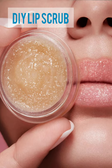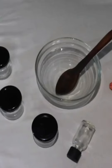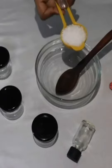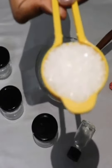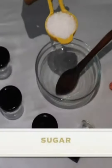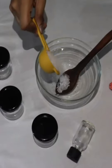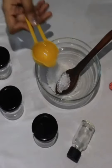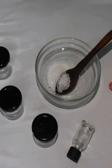Let's make a lip scrub. You will need one tablespoon of sugar. The sugar should not be finely ground; it should be granular so it can act as a scrub.